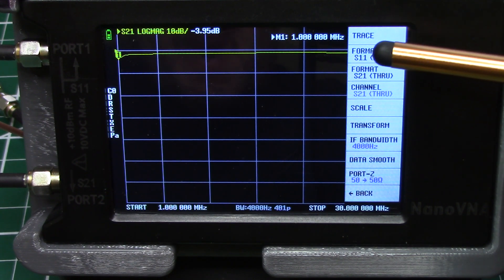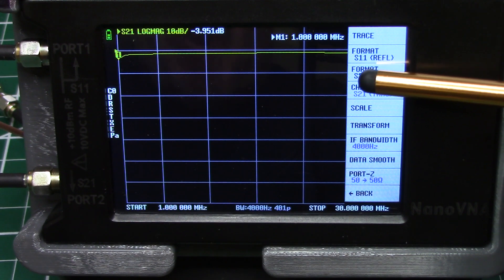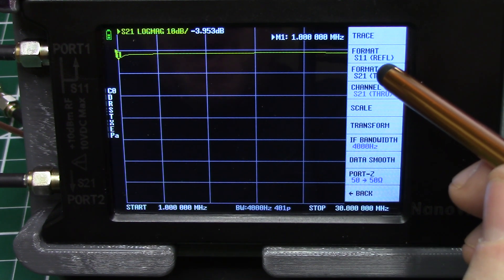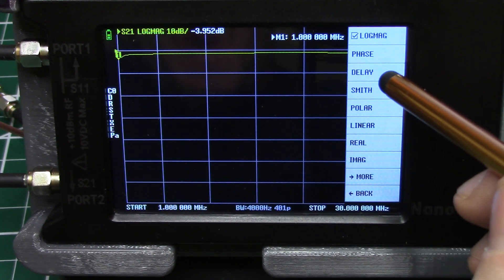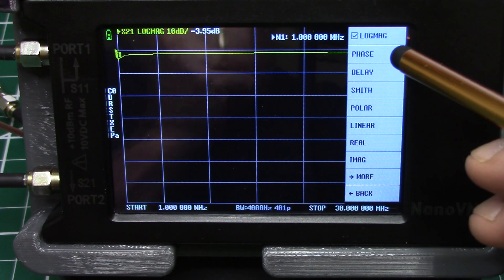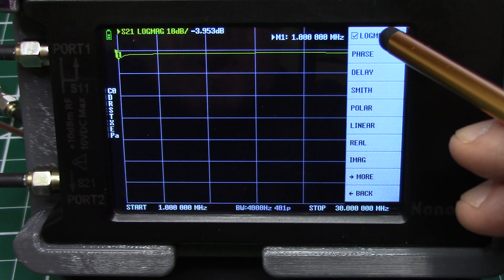So you see here you've got the S11 format which is saying that it's measuring on port 1 and it's transmitting on port 1. Here we're measuring on port 2, we're transmitting on port 1. We want to go into the format, click on it and here you can select what it is you want to measure.